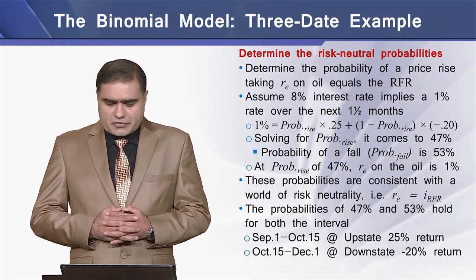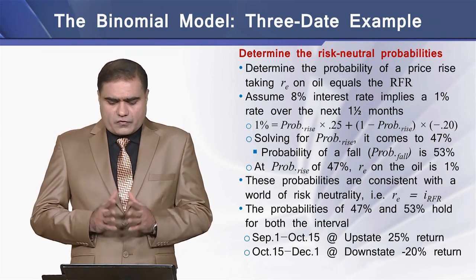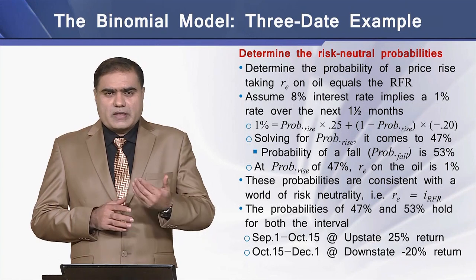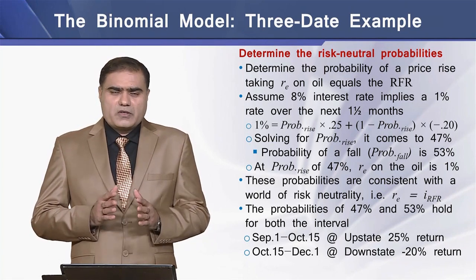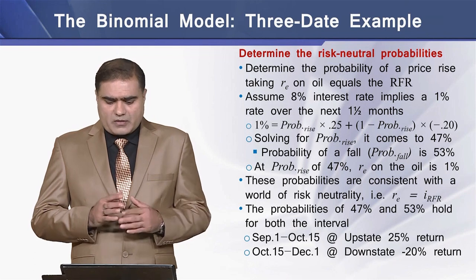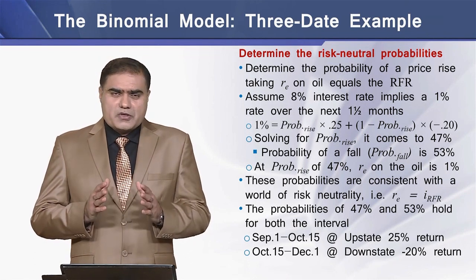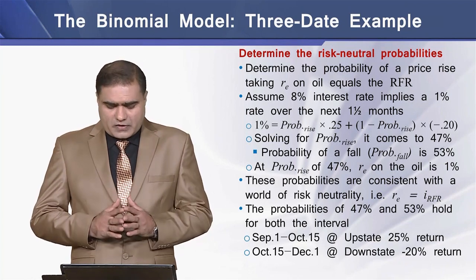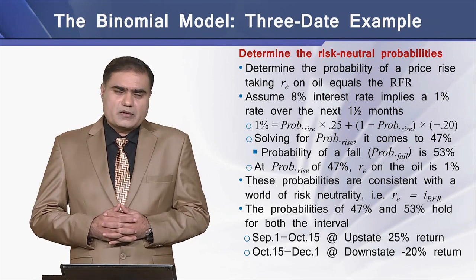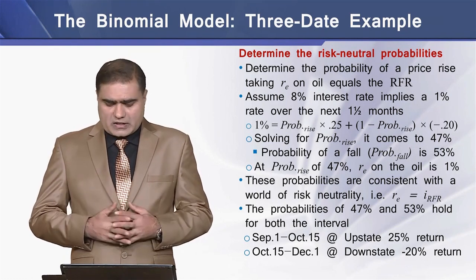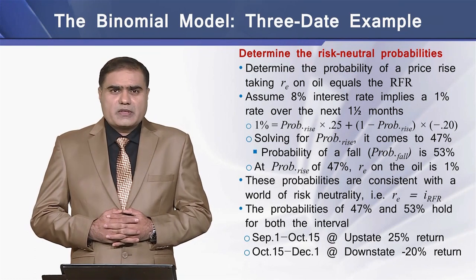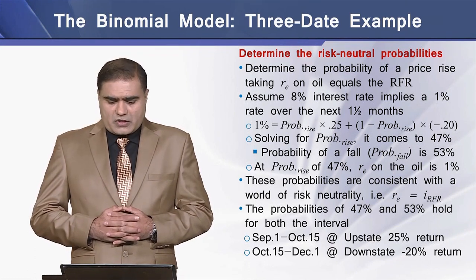Let's first determine the risk-neutral probabilities. We determine the probability of a price rise by setting the required rate of return equal to the riskless interest rate. Assuming an 8% interest rate, this implies a 1% required rate of return over the next 1.5-month interval. Using the unknown probability of rise in the equation, we determine the probability of rise as 47%, which means the probability of fall is 53%.